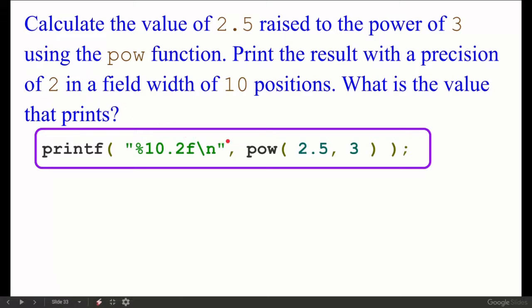Now we have a print statement. Conversion specifier percentage 10.2f, power function 2.5, first argument, second argument 3. The output is not written here, let's write a program and check.